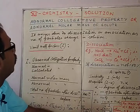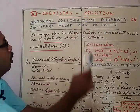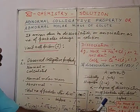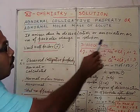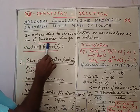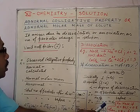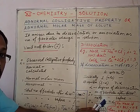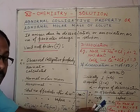Students, let us study today abnormal colligative property under the chapter solution, or it can be stated as abnormal molar mass. It arises due to dissociation or association, as the number of particles changes in solution. The colligative properties discussed so far were for solutions where the solute was non-electrolyte, meaning the number of particles does not change when the solute gets dissolved.